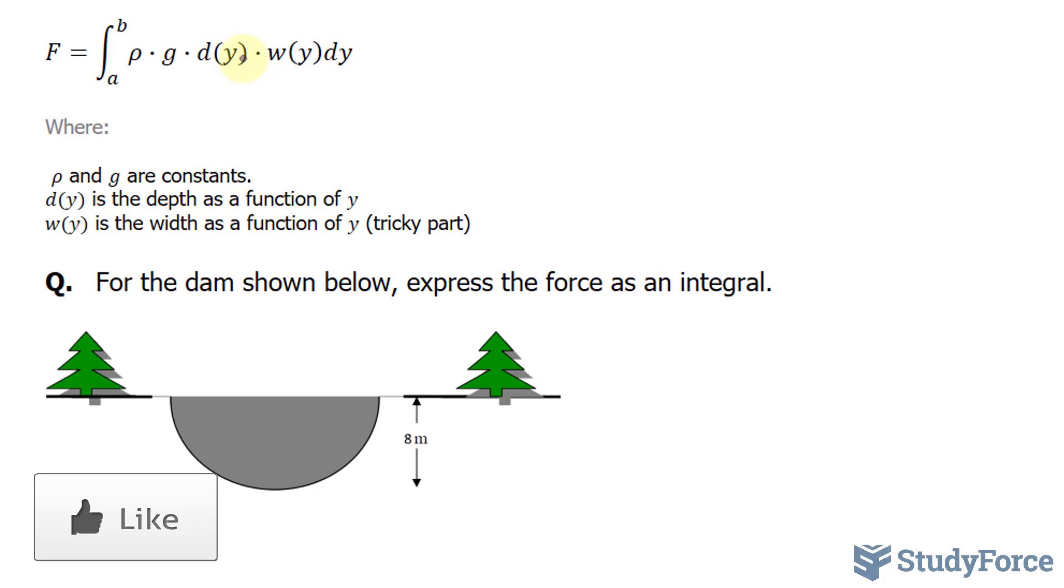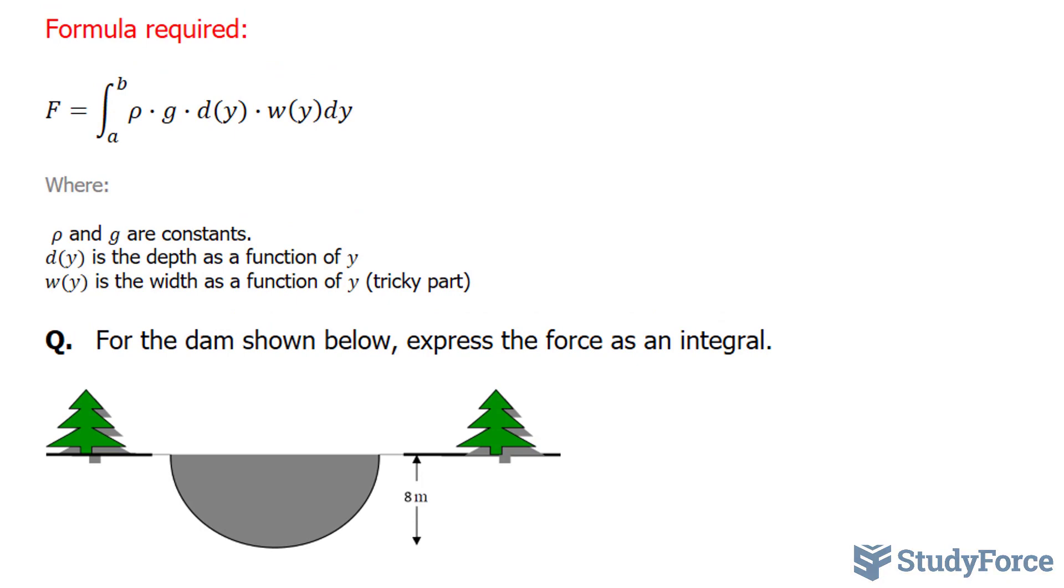First of all, let's set this equation up with what we know. We know what rho is equal to, the density of 1,000 for water. Gravity is 9.8, d of y is y, and that was the case for all the other examples we did in part one. This part, however, is problematic.